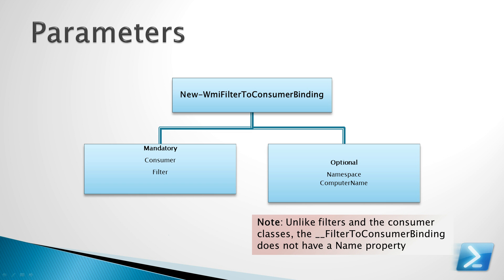The Power Events module includes a New-WMIFilterToConsumerBinding cmdlet. There are two mandatory properties on this cmdlet: the consumer and filter properties. These two properties can be fed either by inline code that defines your consumer and filter, or if you already have a consumer and filter, you can get references to these and pass them to the New-WMIFilterToConsumerBinding function.